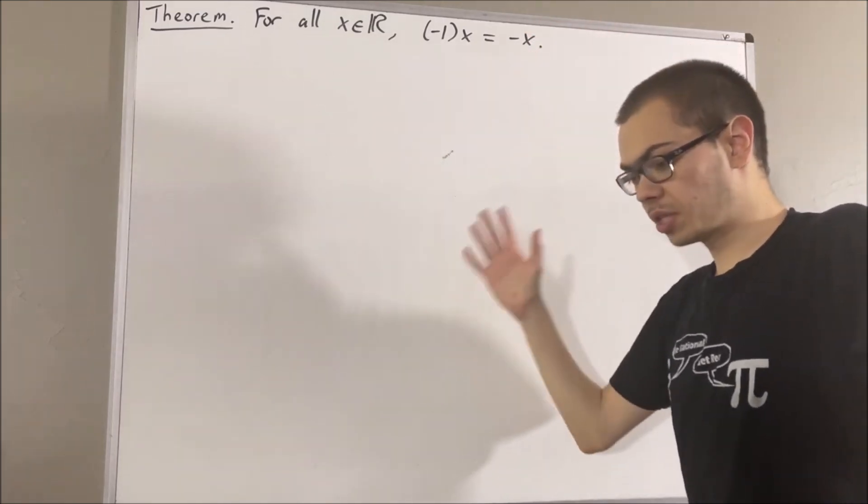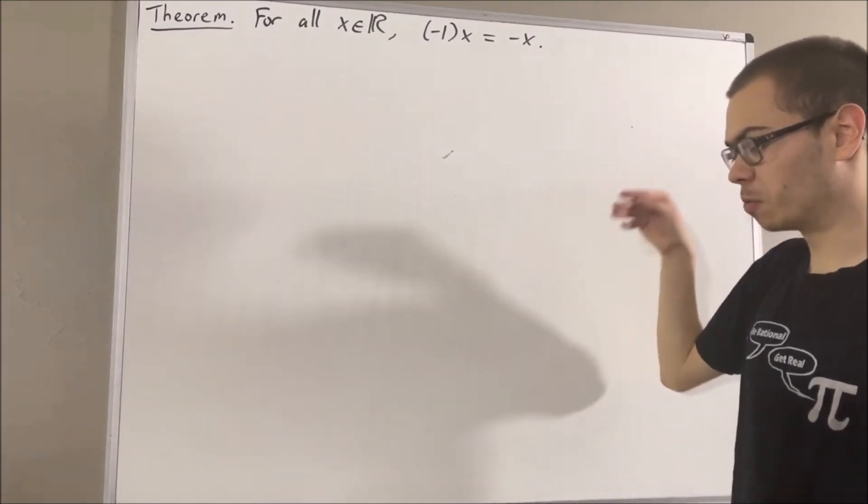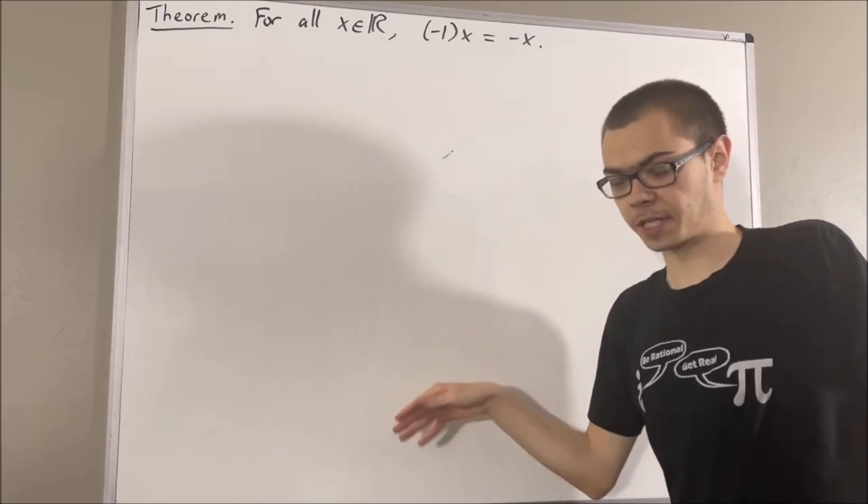Now in this series, we are using a list of 10 axioms for the real number system, and I'll leave that list of axioms in the description of the video below.